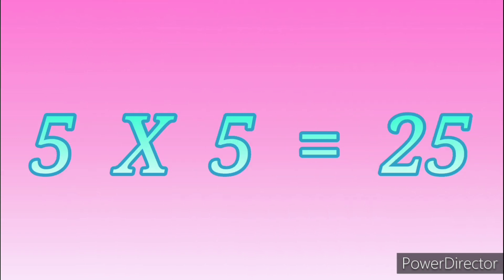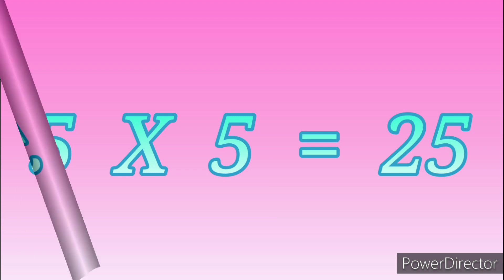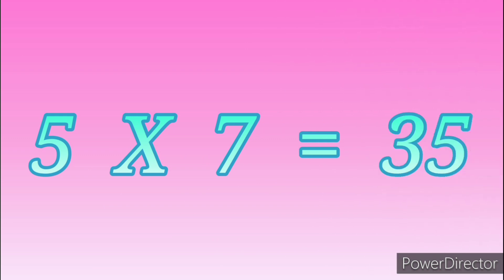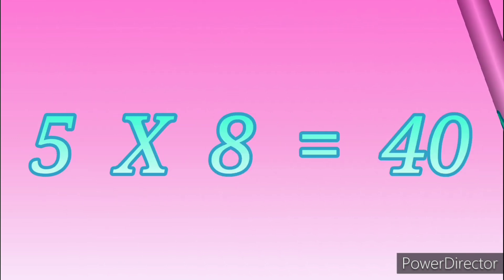5 fives are 25, 5 sixes are 30, 5 sevens are 35, 5 eights are 40.